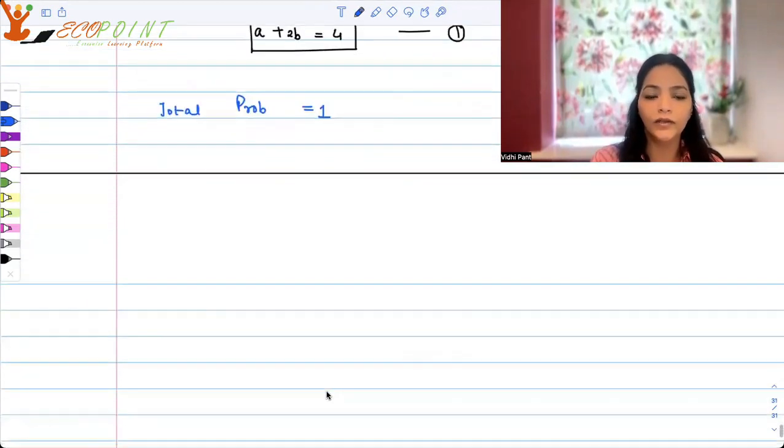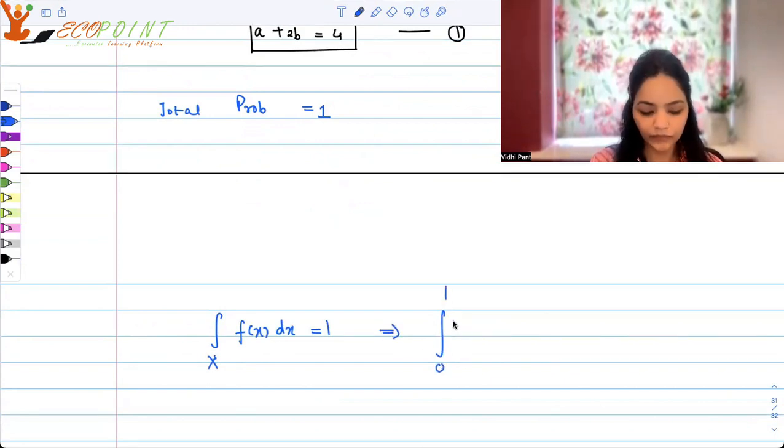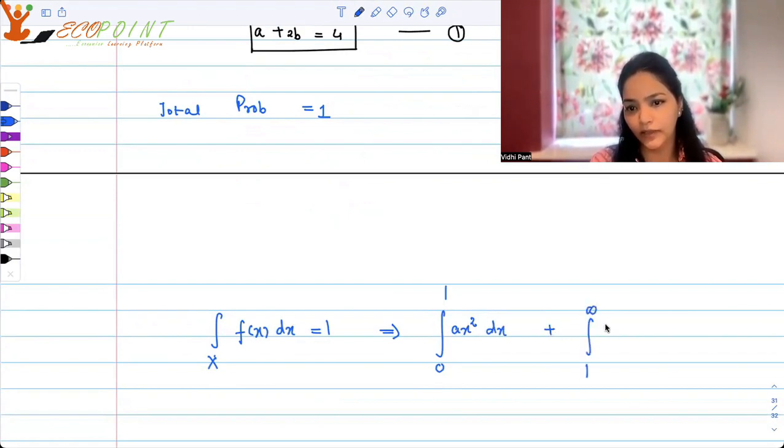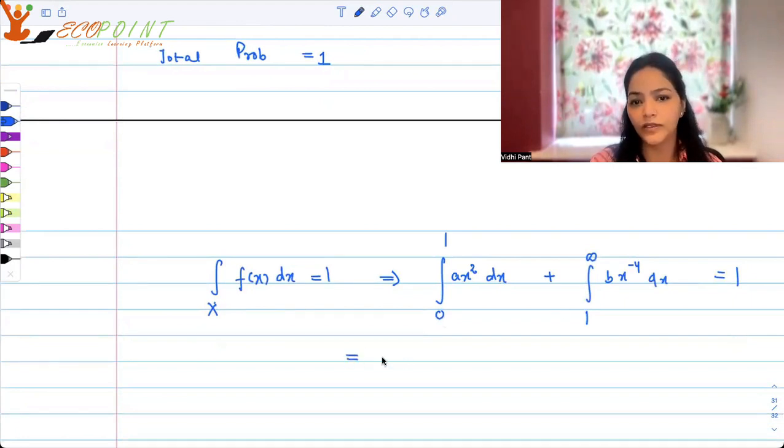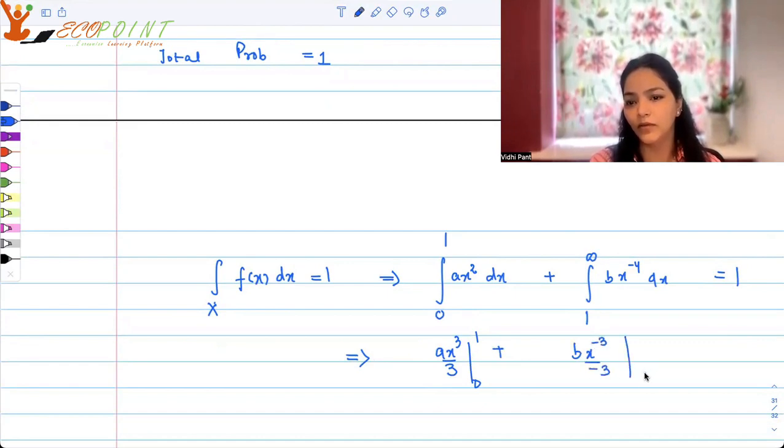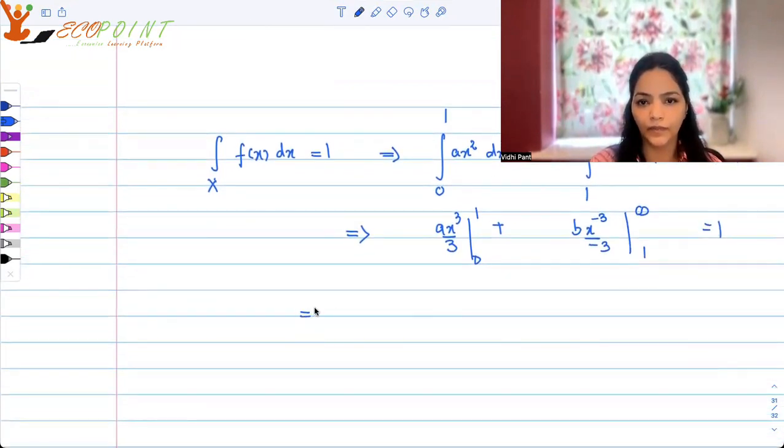That means if I look at the total probability over all the x's, integral fx dx should be equal to 1. That means 0 to 1, our function is a x square dx, plus from 1 to infinity integral of b x to the power minus 4 dx. This integral, the sum of these two integrals should give you 1. So this implies you get a x cube upon 3 from 0 to 1, plus b x to the power minus 3 upon minus 3 from 1 to infinity.